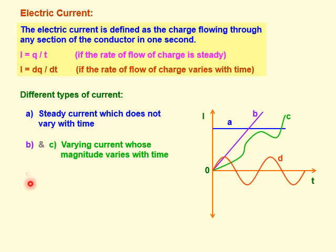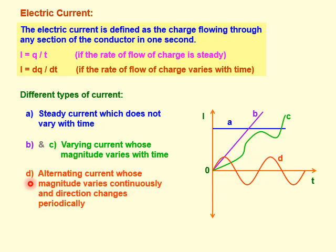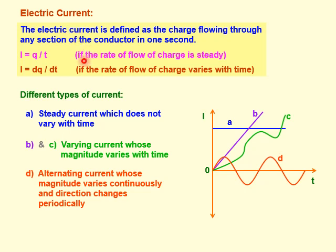Graph d represents alternating current, whose magnitude varies continuously and direction changes periodically. So this current changes continuously and direction also changes periodically — it is called positive and negative, the polarity is continuously changing. The magnitude of current also changes with respect to time, so it is called alternating current.